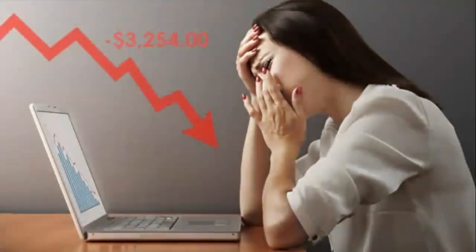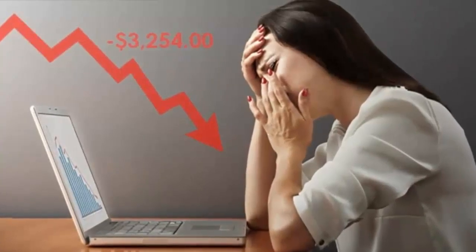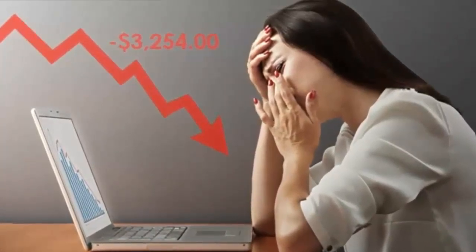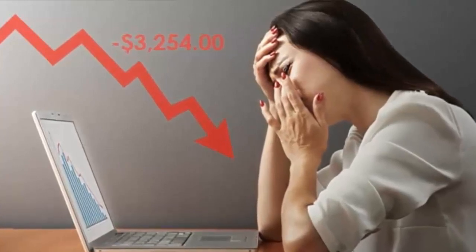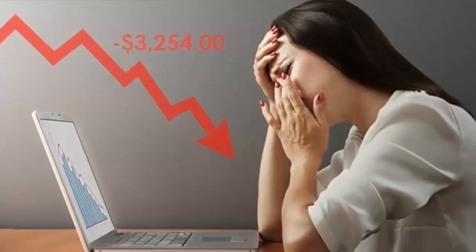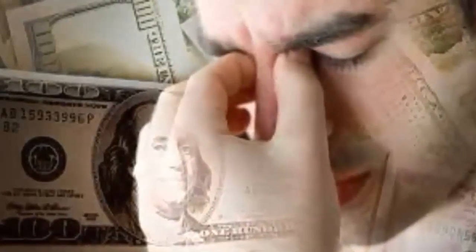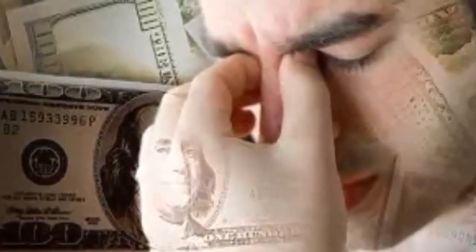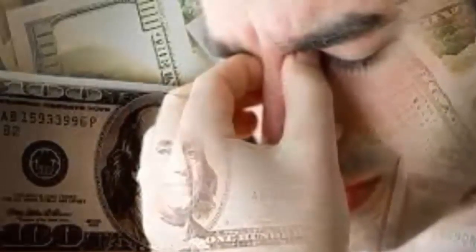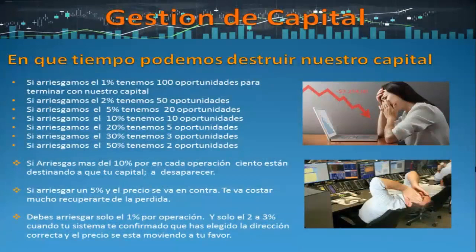Si arriesgamos el 50% con solo 2 pérdidas consecutivas podríamos perder todo nuestro capital. Si arriesgas más del 10% por cada operación, estás destinando tu capital a desaparecer. Si arriesgas el 5% y el precio se va en tu contra, te va a costar mucho recuperarte de la pérdida. Debes arriesgar solo el 1% por operación y solo el 2 a 3% cuando tu sistema te confirma que has elegido la dirección correcta y el precio se está moviendo a tu favor.